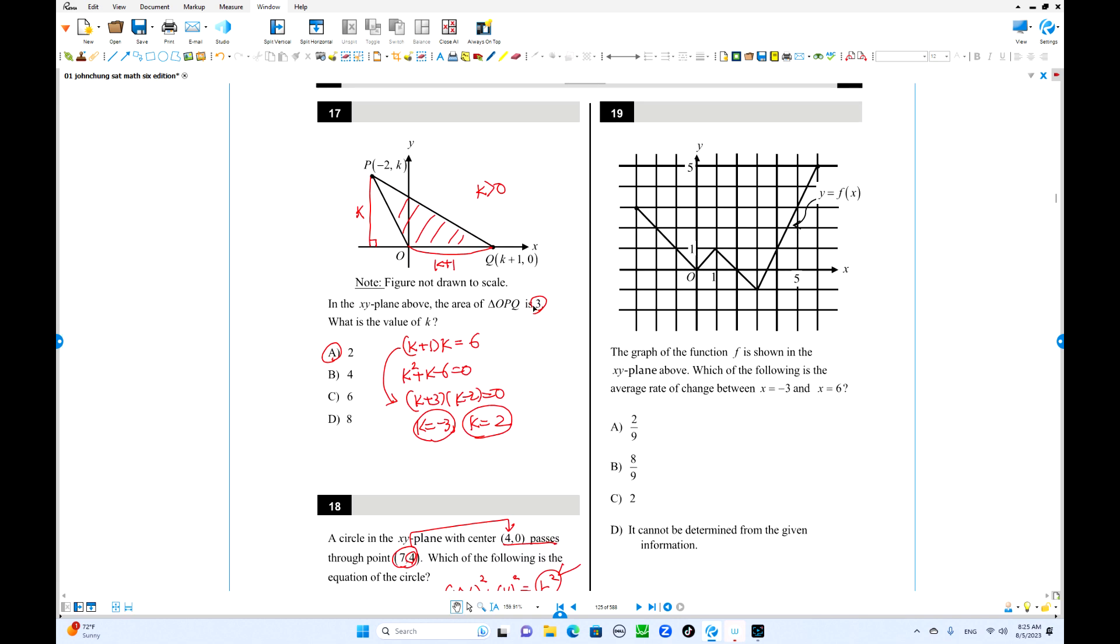Number 19, read the question. Average rate of change between negative 3 and 6. Here is negative 3, this is 6. So we make a secant. Slope of this secant is called the average rate of change. The height is 5 over here, this side is 3.